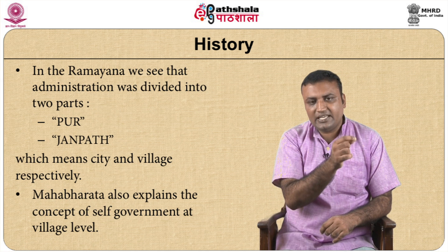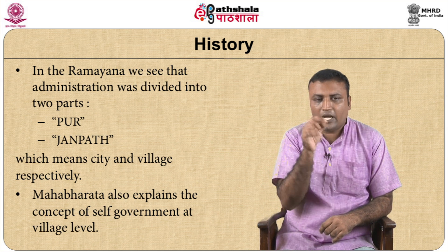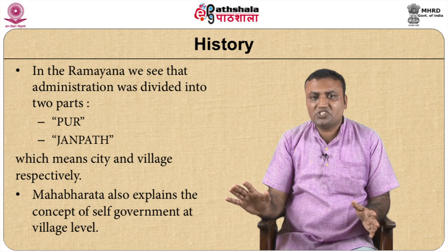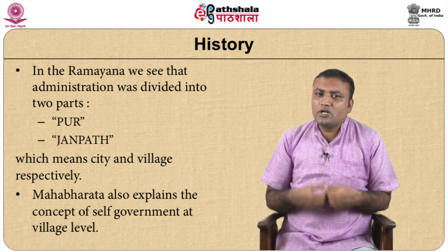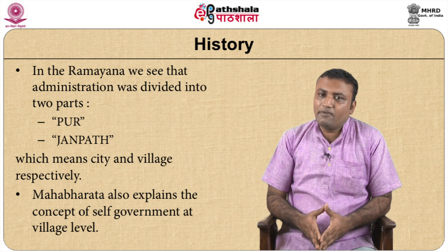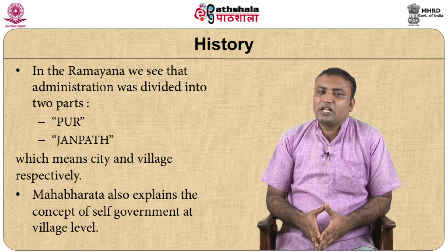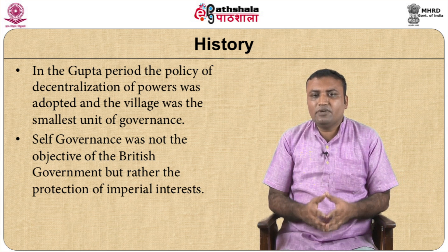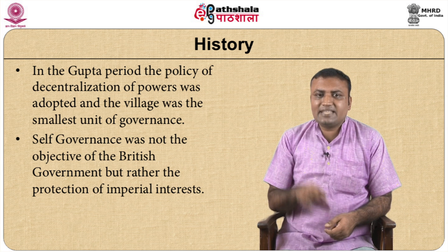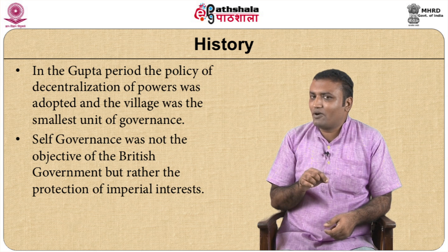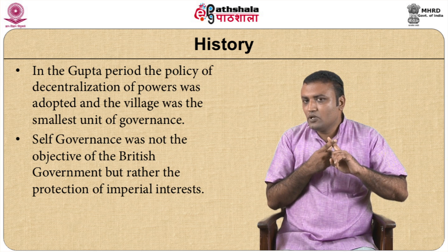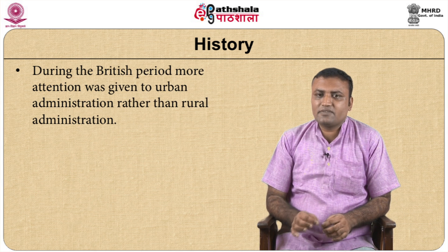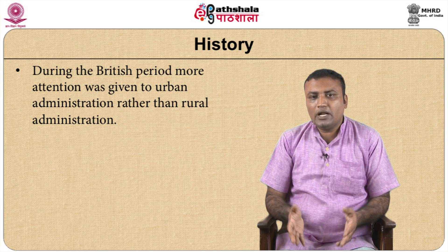In the Ramayana, the administration was divided into two parts — Pur and Janpath, meaning city and village respectively. The Mahabharata also explains the concept of self-government at the village level. In the Gupta period, the policy of decentralization of powers was adopted and the village was the smallest unit of governance. Self-governance was not the objective of the British government; they rather looked for the protection of imperial interests. During the British period, more attention was given to urban administration rather than rural administration.